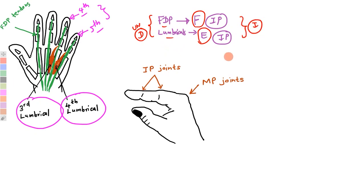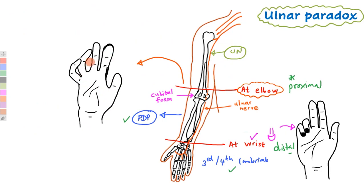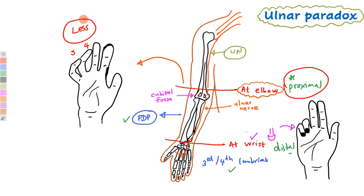The deformity will look like this: the fourth and fifth fingers will not be able to flex or extend properly at the interphalangeal joints. So the clawing will be less pronounced. In conclusion, when the ulnar nerve is damaged at a more proximal point at the elbow, the clawing of the fourth and fifth fingers will be less compared to the clawing seen when the ulnar nerve is damaged at the distal point at the wrist. This is called ulnar paradox.